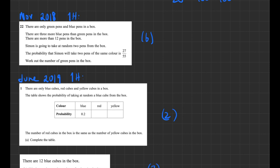From November 2018, a six-mark question: there are three more blue pens than green pens. Let the number of green pens be g and blue pens be g + 3. The probability that Simon takes two pens of the same colour is 27/55. You need to work out the probability of green + green or blue + blue, create an equation equal to 27/55, and solve. Check the worked solutions for full detail.